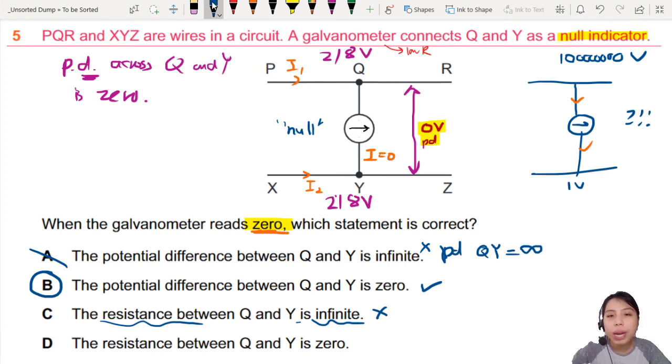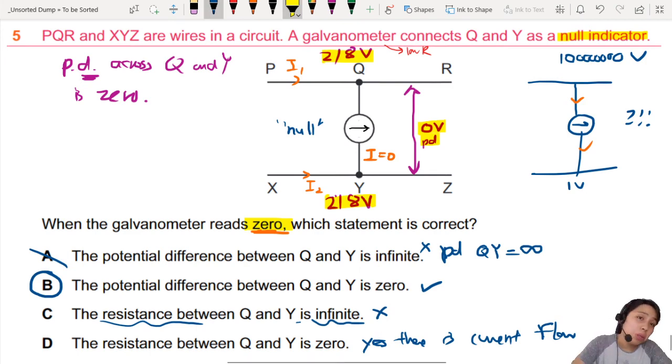D. The resistance between Q and Y is zero. Now this is also another weird idea. If the resistance Q and Y is zero, yes, there is current flow. So, but that doesn't really serve the purpose of the null indicator method. I mean, you still won't have current if the potential is balanced between here and here. So, although it's mathematically correct, but it's not the best answer for this galvanometer null method. So B is the best choice here.